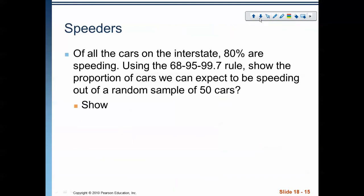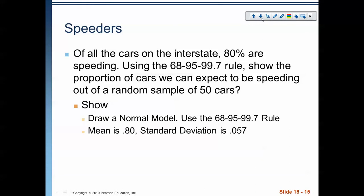Okay? So, let's make the 68, 95, 99.7 rule. So, there's my mean. The standard deviation is 0.057. And again, we got that by using our formula. To find the standard deviation, we're going to take the square root of p, 0.8, times 0.2, over the sample size of 50 cars. And that's 0.057.